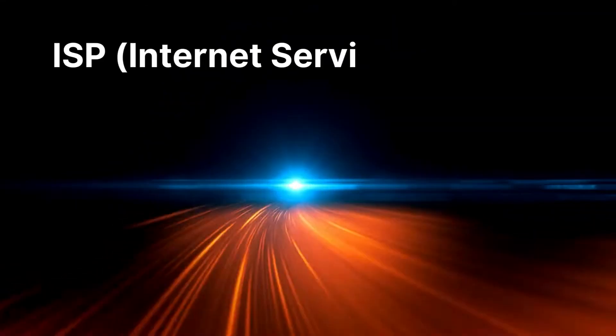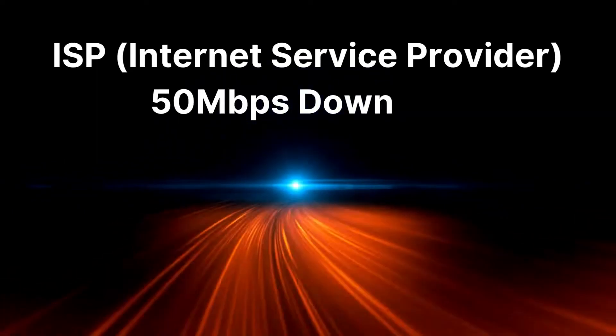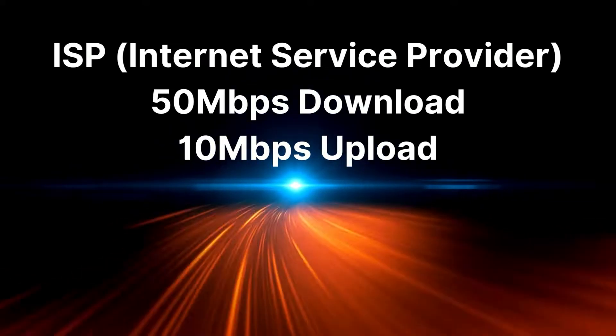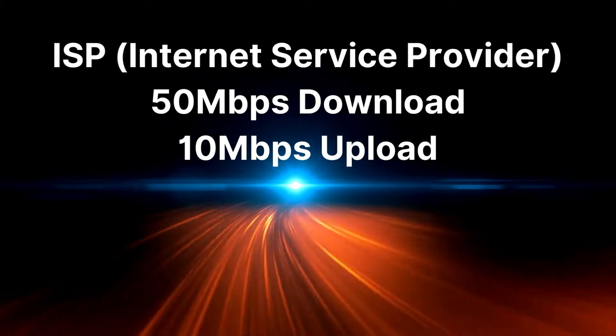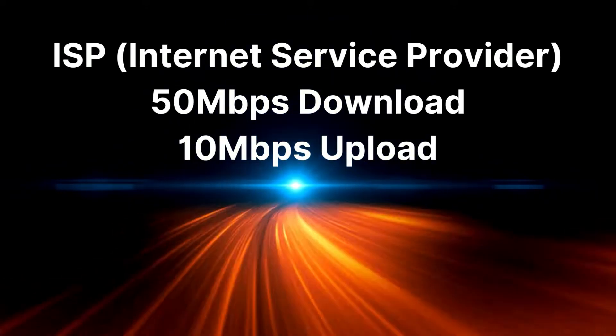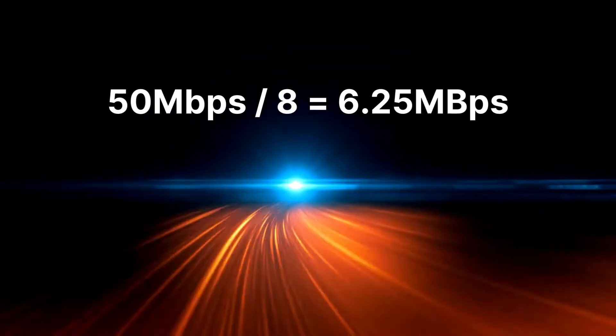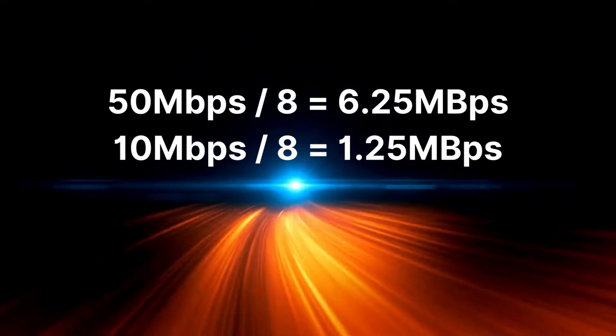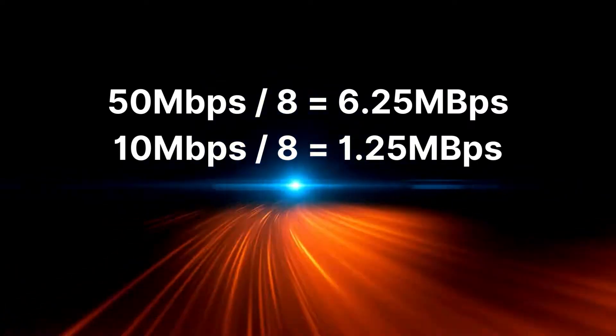The number is good to know when downloading to make sure that you're getting what you pay for. For example, if your ISP says they can sell you the speed of 50 megabits per second download and 10 megabits per second upload, you take that number and divide it by 8 to get the megabytes per second. So for 50 megabits per second, your download speed should be around 6 megabytes per second. It's good to have this understanding because they are used interchangeably.